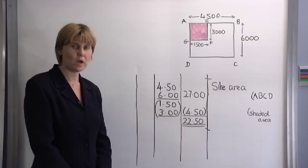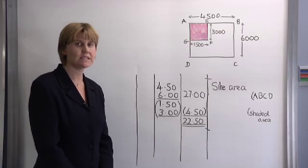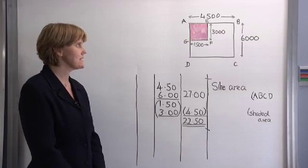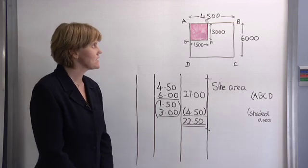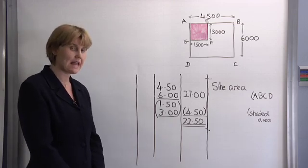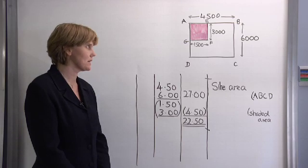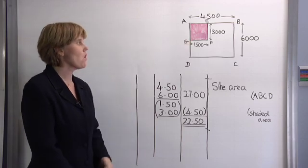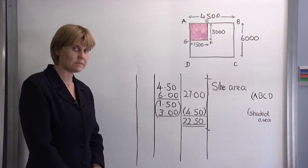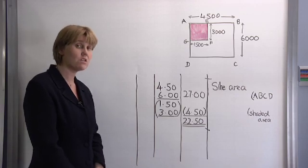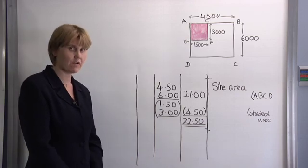Now let's have a look at a worked example. Here we have a site area ABCD and the site is four and a half metres in length by six metres wide. But we have this shaded area of 1.5 metres by three metres wide which is not part of the site area.